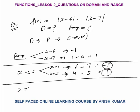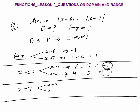For all values of x greater than 7, I need to check. When x = 10: mod(10-6) = 4, mod(10-7) = 3, output = 4 minus 3 = 1. When x = 8: mod(8-6) = 2, mod(8-7) = 1, output = 2 minus 1 = 1. So for all values of x greater than 7, the output equals 1.